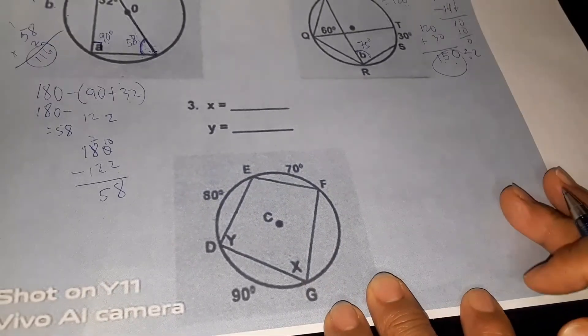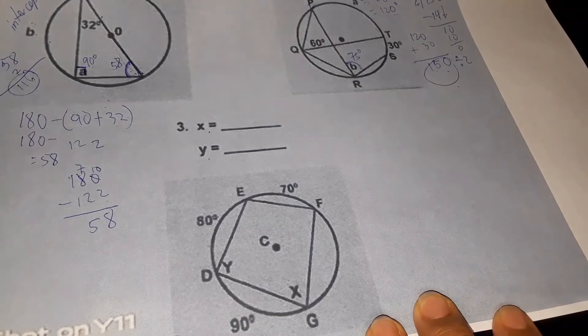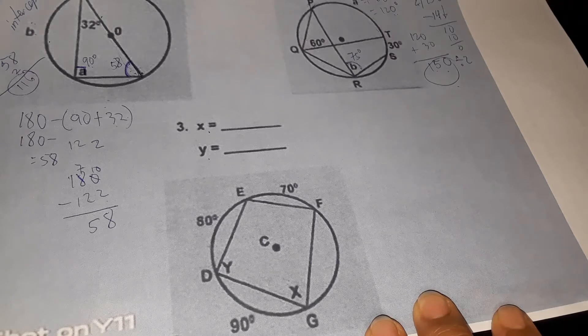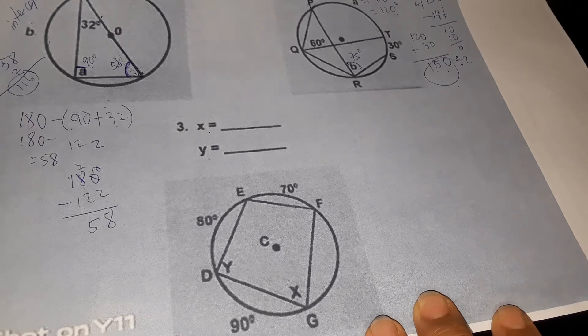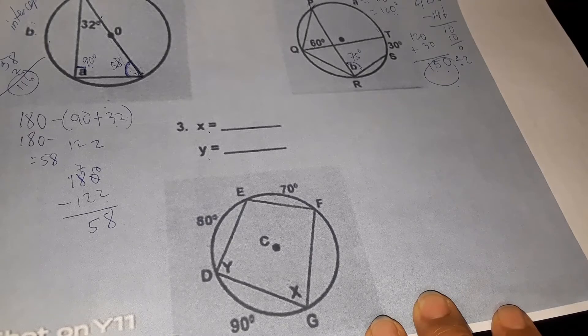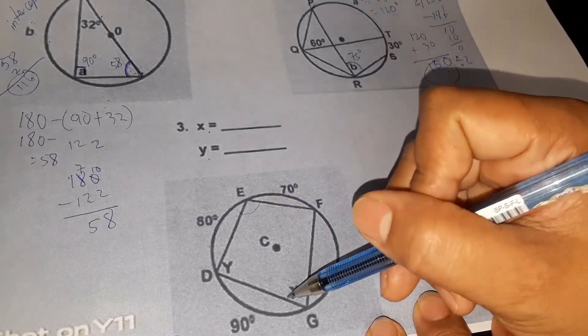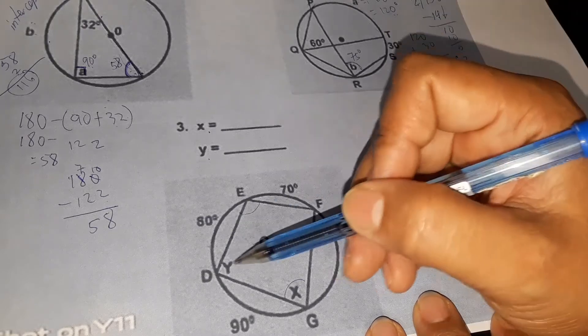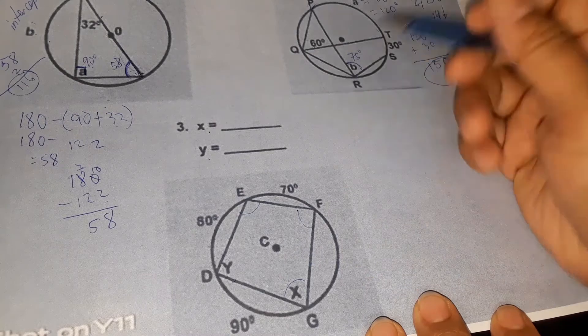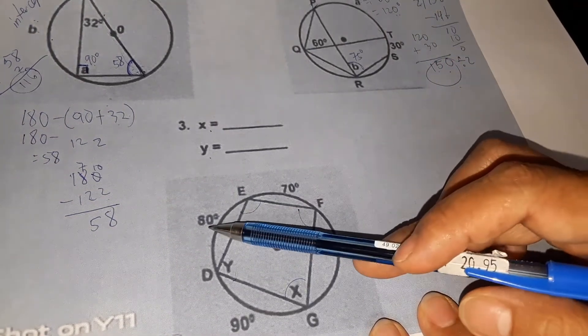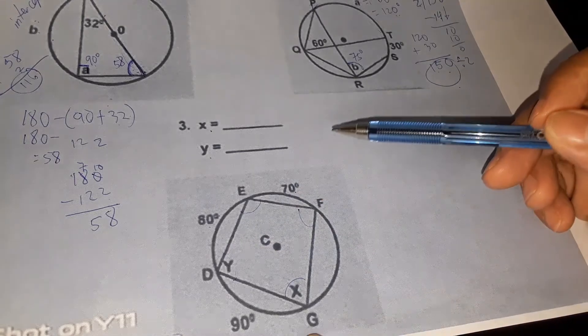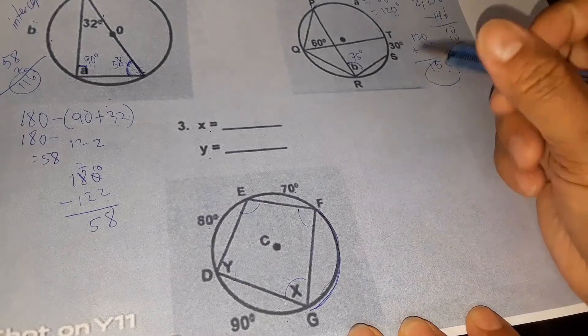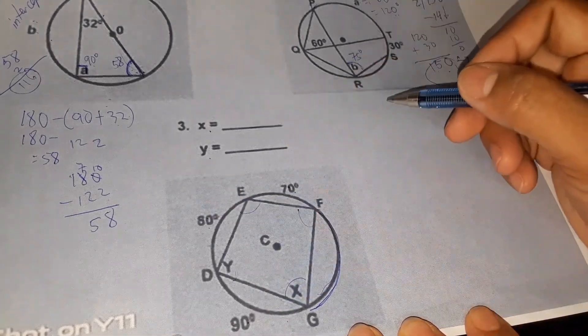Number 3 problem. We need x and y, but before that I need to tell you corollary number 3: the opposite angles of a quadrilateral inscribed in a circle are supplementary. Meaning to say, this angle and this angle are supplementary. When we say supplementary, if you add them they equal 180. This one and this one are also 180. We have given here 80, 70, and this is 90.